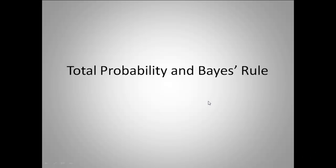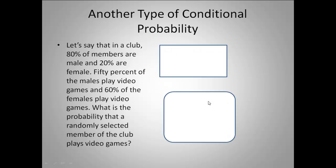We are going to take a look at the rule of total probability and also at Bayes rule. I'm going to start with the situation first so that we can see where our formulas are going to come from.